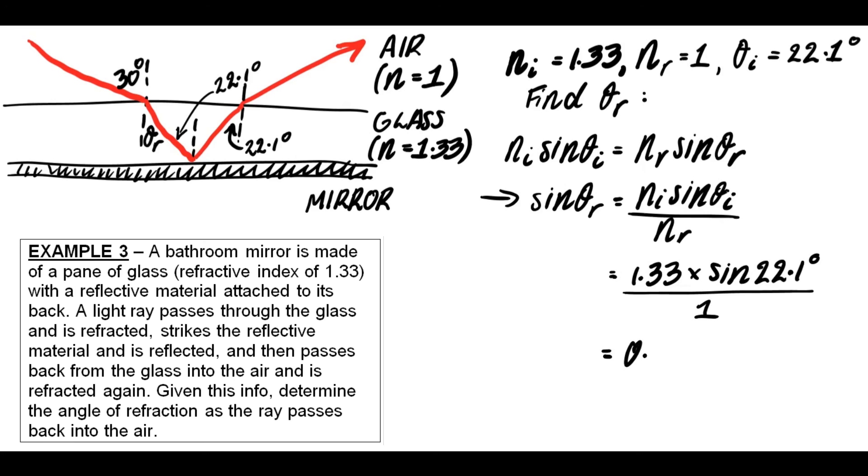I wanted to find what's the angle of refraction as it passes back from the glass into the air again. So my sin of θr was 0.5, so I can now solve for the inverse sine of 0.5, and I get 30 degrees as my answer.